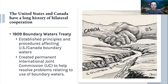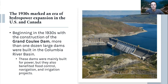The treaty provided a framework to deal with these disputes. It held its first meeting in 1912 and has worked over the last century-plus to resolve more than 100 matters raised by the two federal governments. The Columbia River Treaty more specifically came about during this era of hydropower expansion in the United States and Canada.